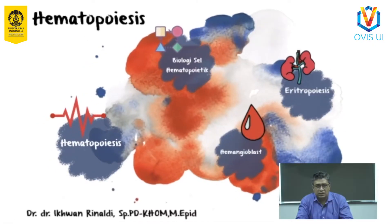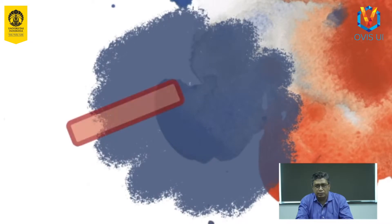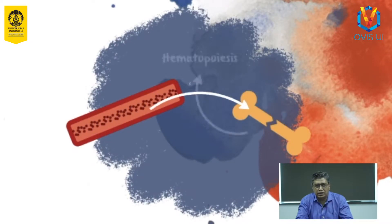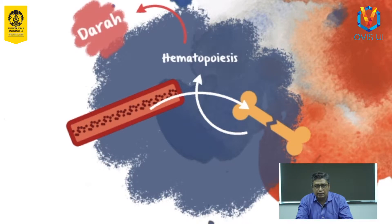Sebelum kita belajar lebih mendalam mengenai topik ini, pernahkah kalian bertanya darah yang bersirkulasi di dalam pembuluh darah kita itu berasal dari mana? Melalui pembahasan kali ini, kita akan bersama-sama mencari tahu tentang proses pembuatan sel darah. Ternyata sel darah kita itu diproduksi oleh sumsum tulang, dan proses ini disebut dengan hematopoiesis. Kata hematopoiesis berasal dari kata hemato yang berarti darah, dan poiesis yang berarti pembuatan.